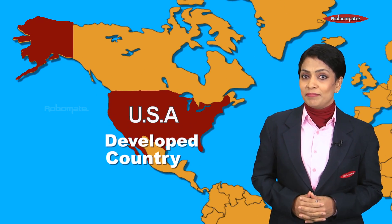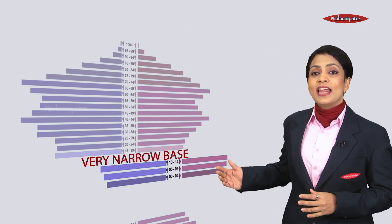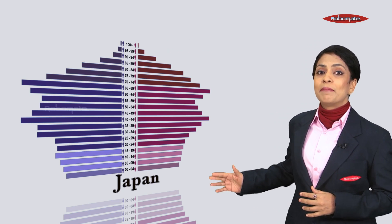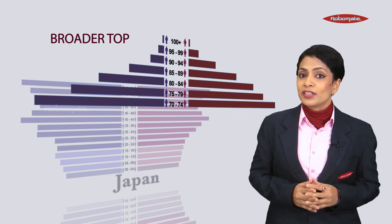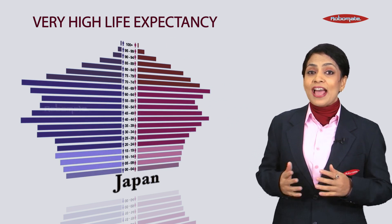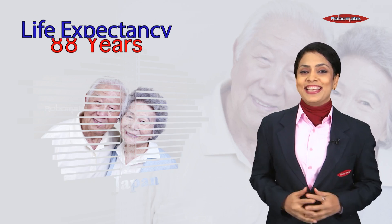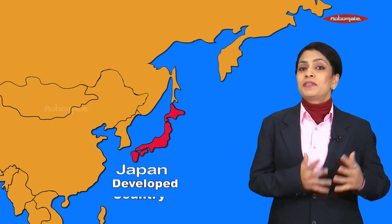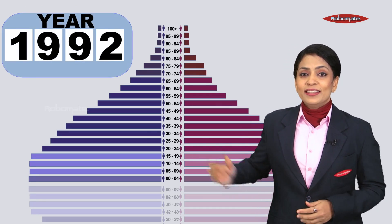An exception to the USA is Japan. Japan's population pyramid has a very narrow base, indicating a very low birth rate. The pyramid broadens as it goes towards the top, as more people are living longer. The size of the top is broader, meaning more people are reaching very old age. The average life expectancy in Japan is about 88 years — one of the highest in the world. Japan is a developed country but shows a shrinking and aged population.